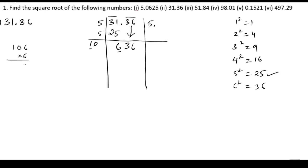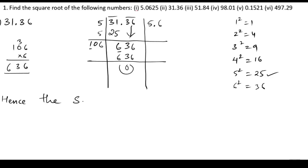So 3 times 6 is 36. We got 636. So 6 into 6 gives us 636. The remainder is 0. Therefore, the square root of 31.36 is 5.6.